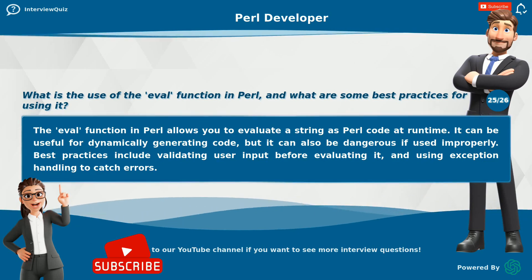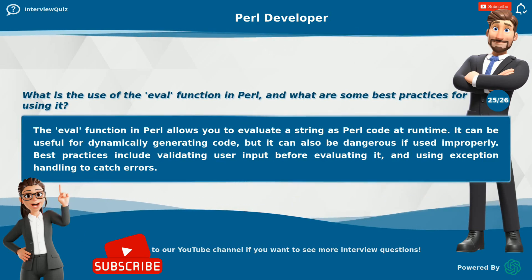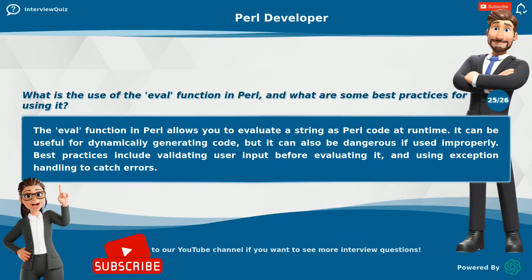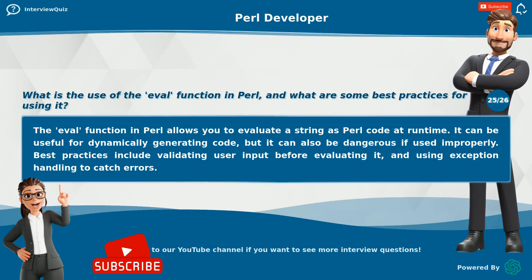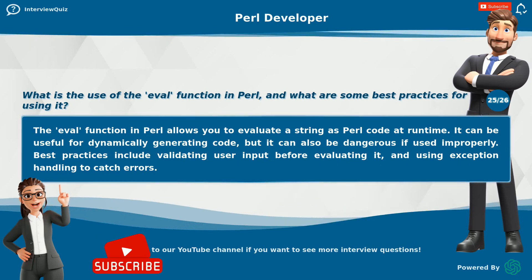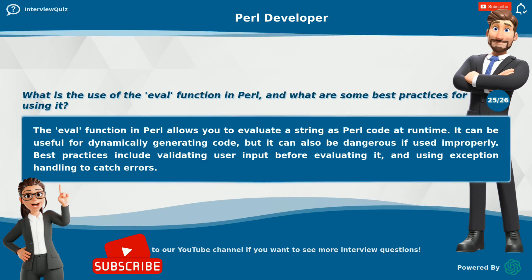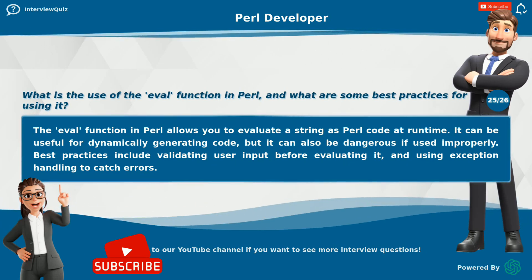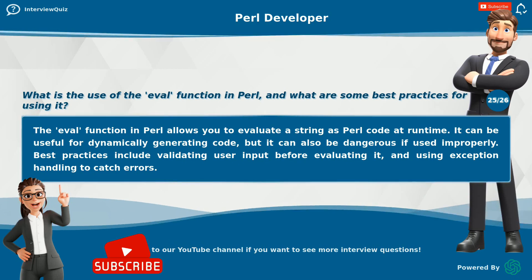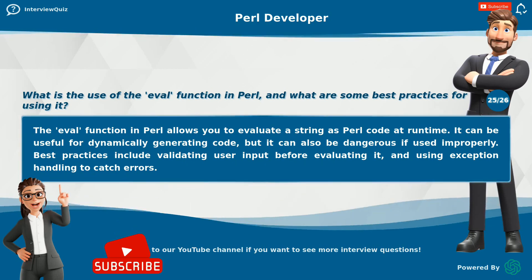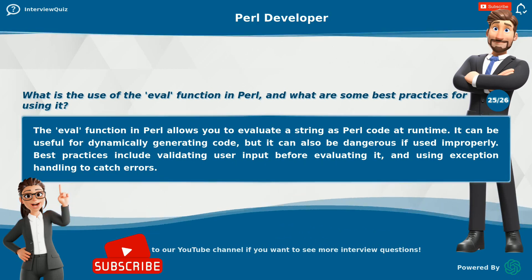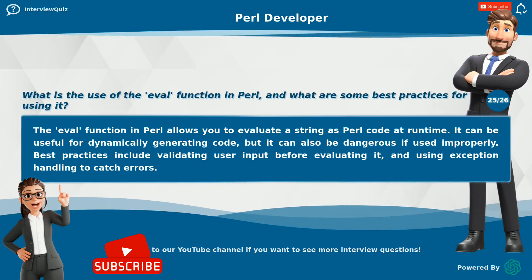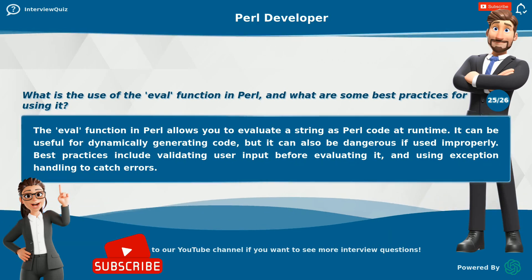What is the use of the eval function in Perl, and what are some best practices for using it? The eval function in Perl allows you to evaluate a string as Perl code at run time. It can be useful for dynamically generating code, but it can also be dangerous if used improperly. Best practices include validating user input before evaluating it, and using exception handling to catch errors.